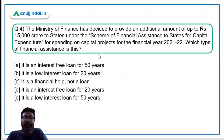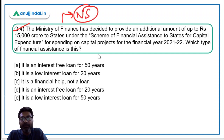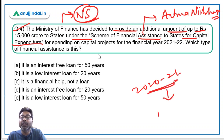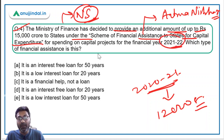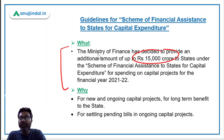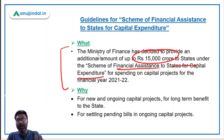Now let's move to question number four. The Ministry of Finance, headed by Nirmala Sitharaman, has decided to provide an additional amount of up to rupees 15,000 crores to states under the scheme of financial assistance to states for capital expenditure. For the financial year 2020-21, 12,000 crores were allocated, but for the upcoming financial year 2021-22, rupees 15,000 crores has been allocated. This 15,000 crore fund will go for new and ongoing capital projects for long-term benefit to the states.